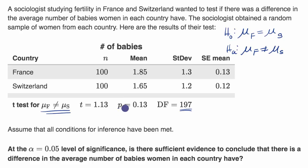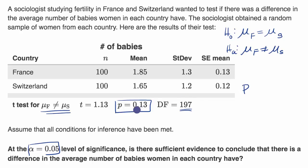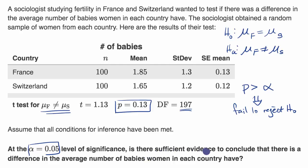So what's going on here? You really just have to compare this value to this value. At the alpha equal to 0.05 level of significance, is there sufficient evidence to conclude that there is a difference in the average number of babies women in each country have? We can see that our p-value, 0.13, is greater than our alpha value, 0.05. And so because of that, we fail to reject our null hypothesis. No, there is not sufficient evidence to conclude that there is a difference. There's not sufficient evidence to reject the null hypothesis and suggest the alternative.